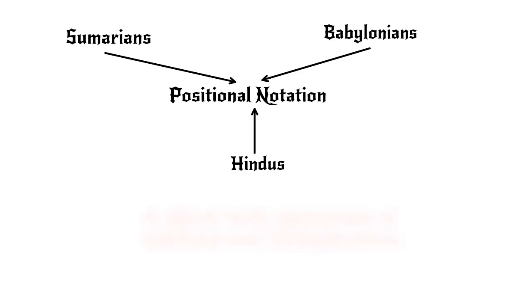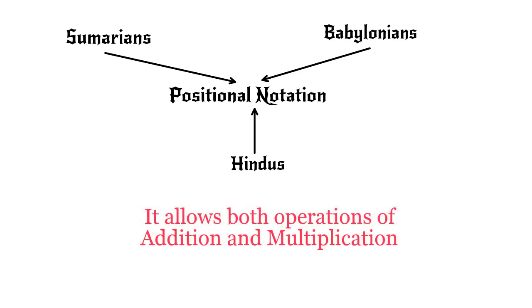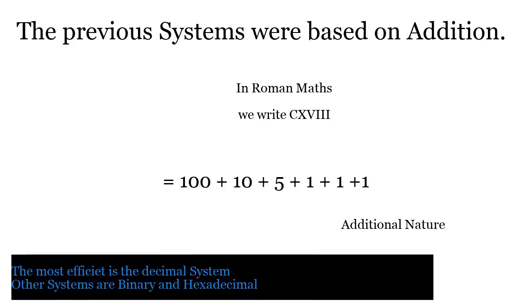This system allows both operations of addition and multiplication. The previous numerical systems used to support only addition. For example, in Roman symbols we write CXVIII, equivalent to 100 plus 10 plus 5 plus 1 plus 1 plus 1.